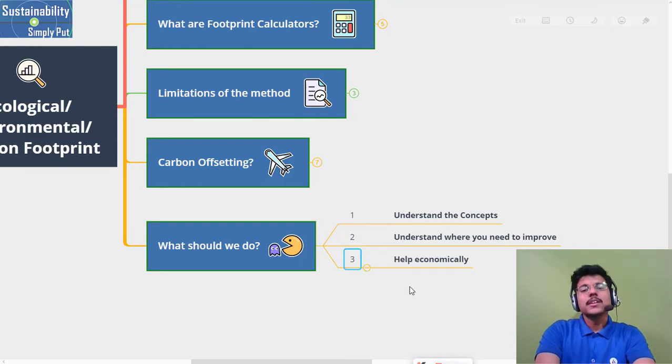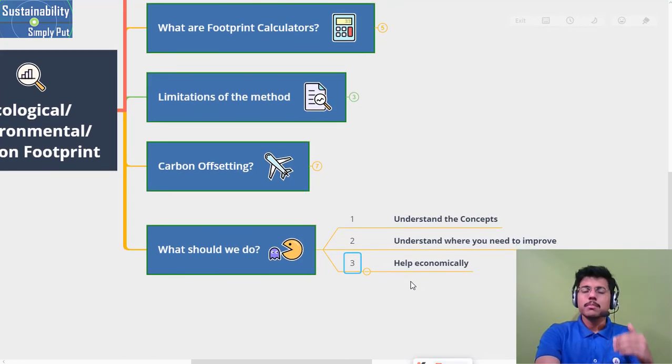And then you can help economically by buying the carbon credits. Why I'm saying that - let's say today you are very motivated, you calculated your footprint and you are buying some offsets or carbon credits. It's good, but you will do it for only one time or two times at the most. But if you understand all these concepts, if you are committed to improve in your daily life, unless and until you improve...